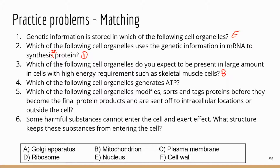Number four: which of the following cell organelles generates ATP? ATP is the rechargeable battery — which cell organelle is involved in energy production? That's mitochondria. I was trying to trick you — I actually have mitochondria as the answer for two questions. Number five: which of the following cell organelles modifies, sorts, and packs proteins before they become the final protein product and are sent to intracellular locations or outside the cell? That's the job for the Golgi apparatus. After proteins are synthesized, they go through rough ER for some processing, and then they enter the Golgi apparatus to be modified, sorted, and tagged to indicate where they need to go.